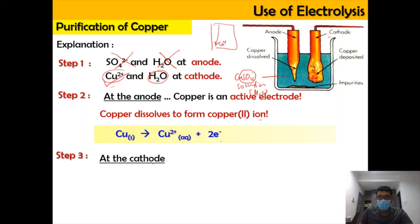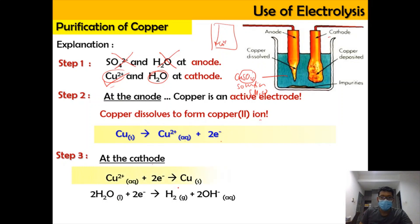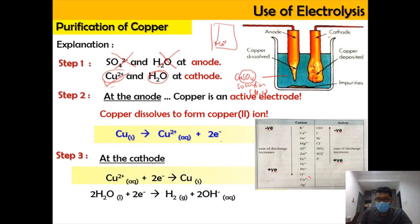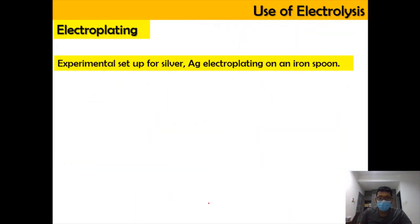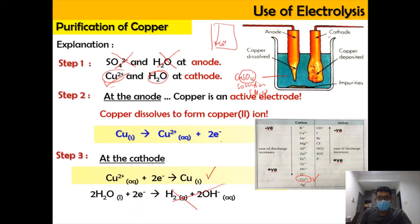At the cathode, the Cu²⁺ which is in the solution and has a more positive SRP value will be selected for reduction. So Cu²⁺ is selected instead of water. These two equations will be happening: copper solid to Cu²⁺ aqueous at the anode, and Cu²⁺ aqueous to copper solid at the cathode. This is what happens during the purification process.